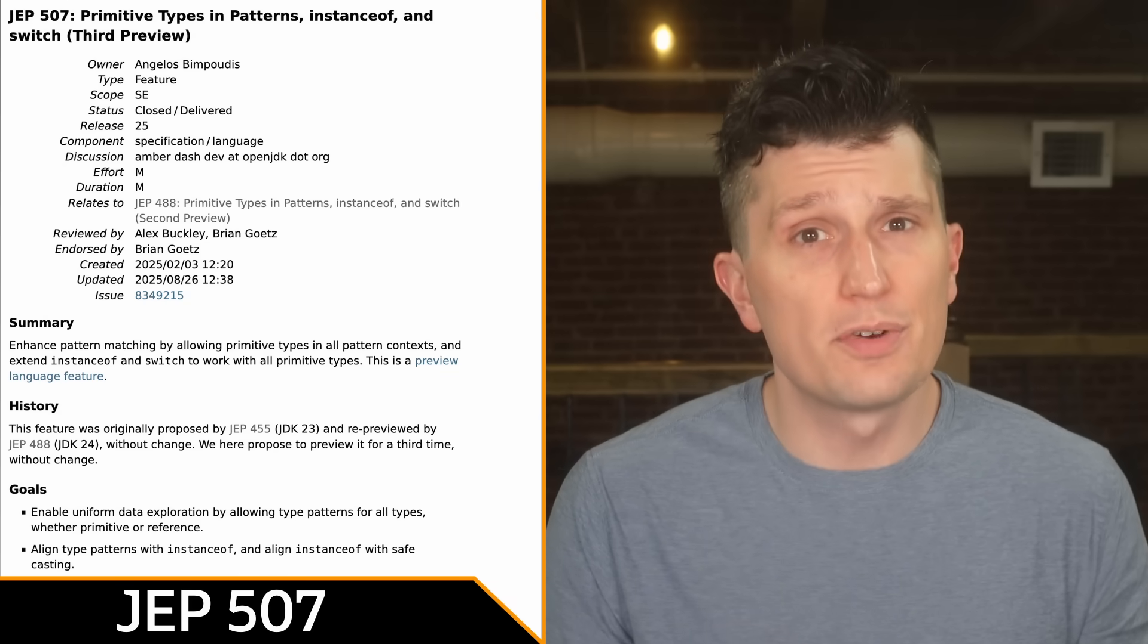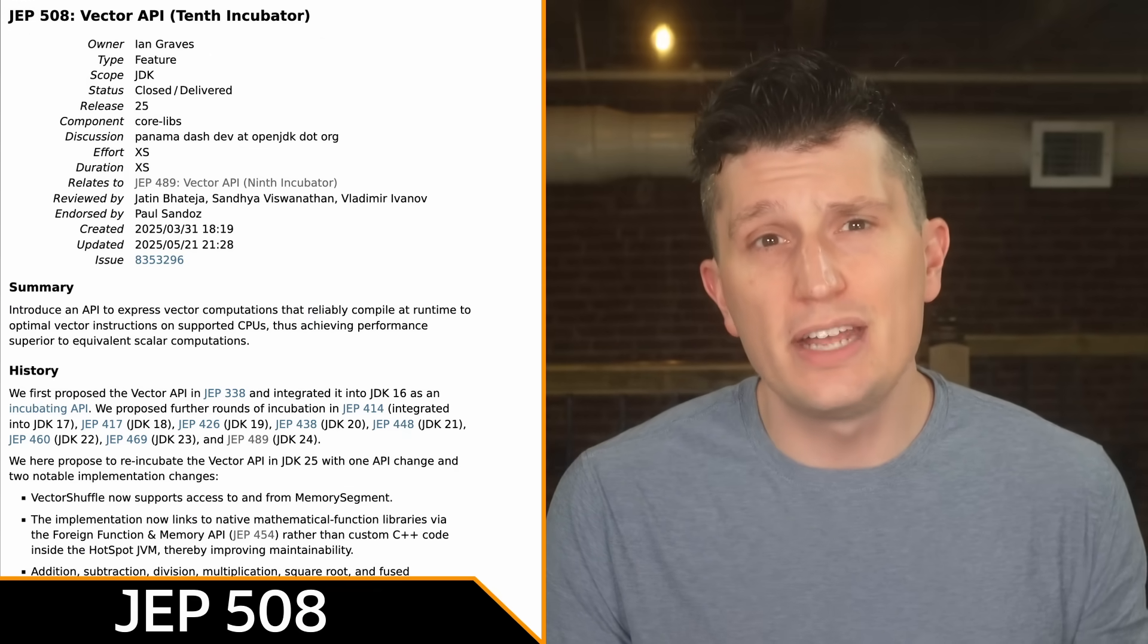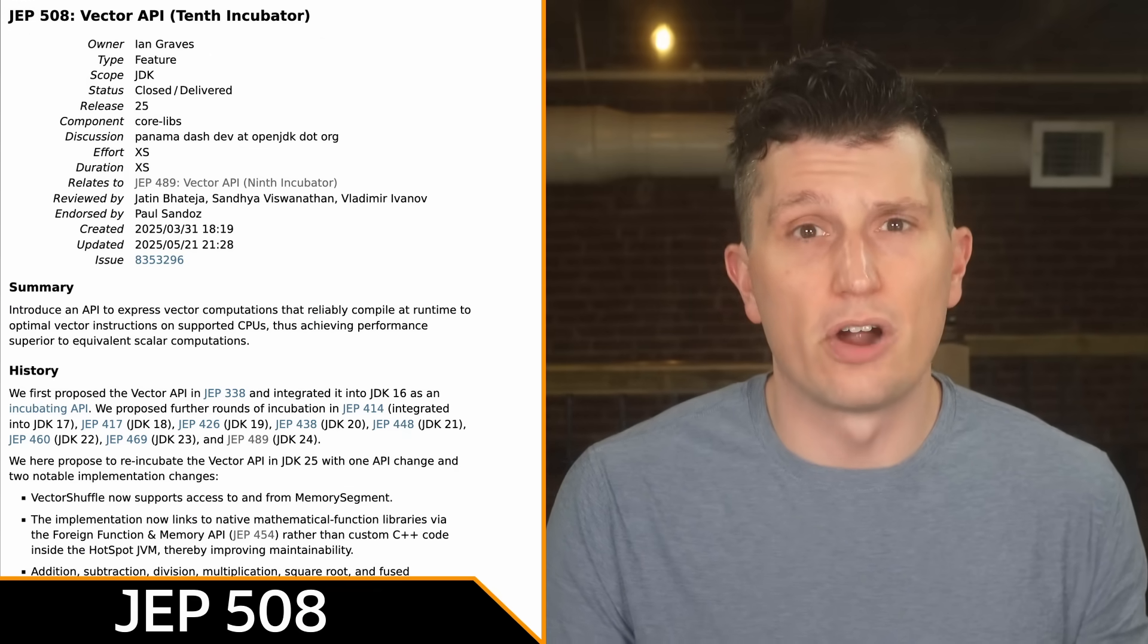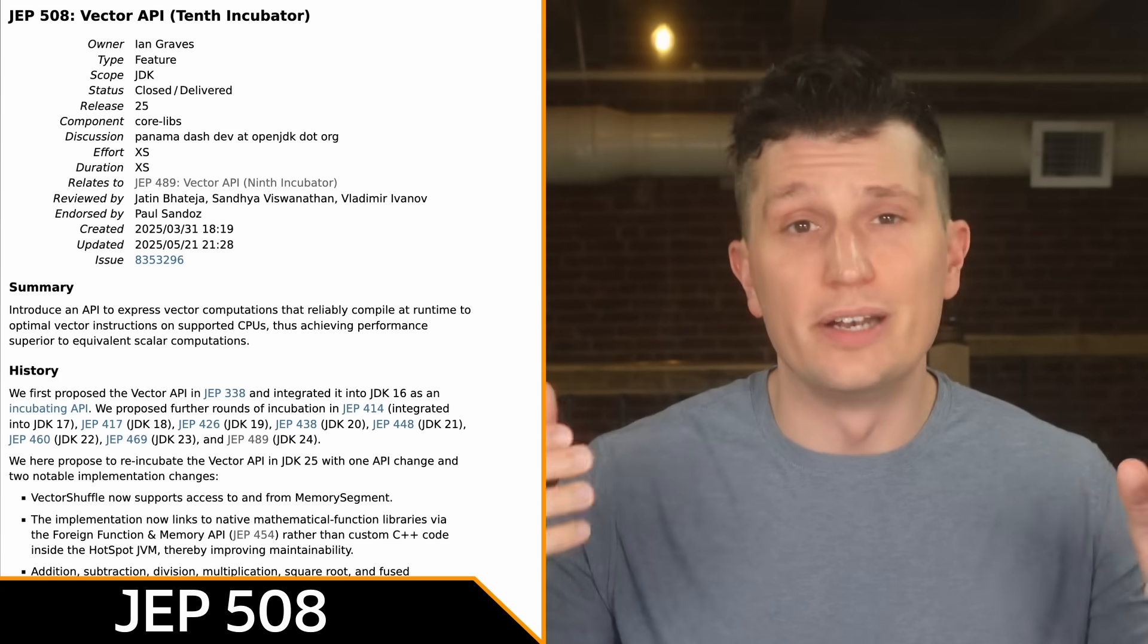JEP 507 repreviews the Primitive Types and Pattern Matching feature, which remains unchanged from its initial previewing in JDK 23. The Vector API remains in Incubator status and will remain so until Valhalla features are integrated into the mainline JDK. Insert Valhalla win jokes here.